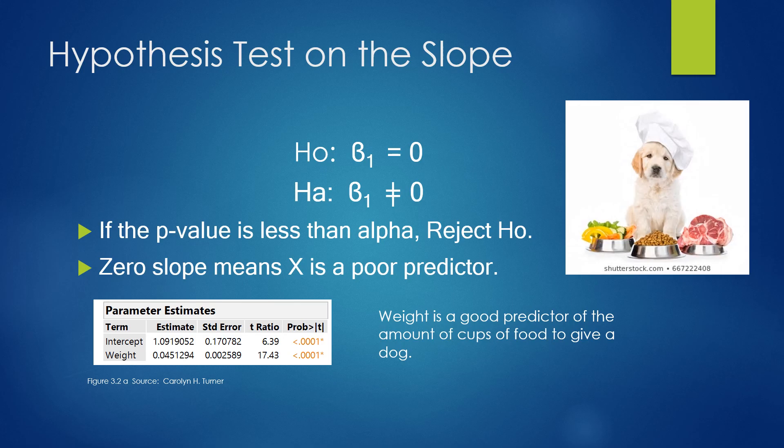We can also perform a hypothesis test on the slope. Ho is the null hypothesis. Then we'll use the symbol beta sub 1 for the slope. We'll always put equals in h sub 0 and we'll set it equal to the value of 0. So h sub 0 says there is 0 slope. The alternative hypothesis, h sub a, says that the slope does not equal 0.